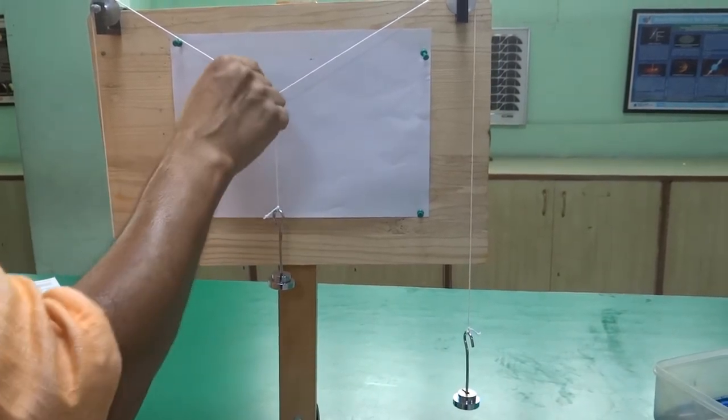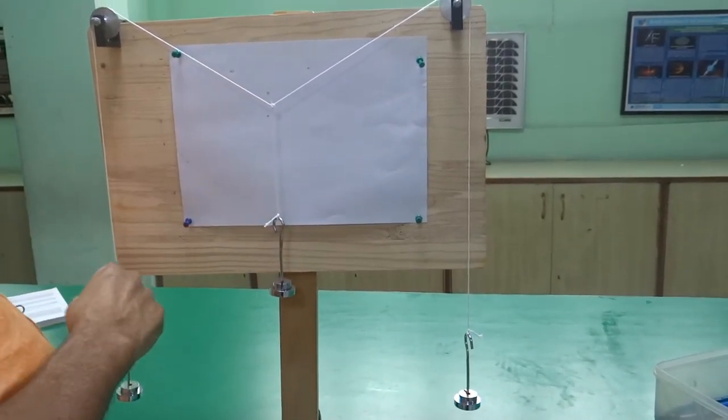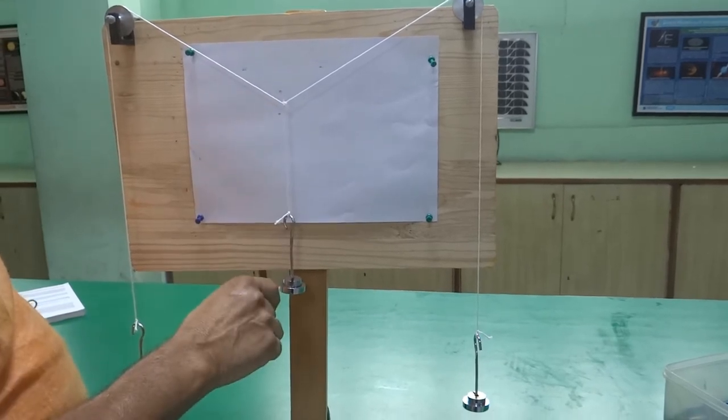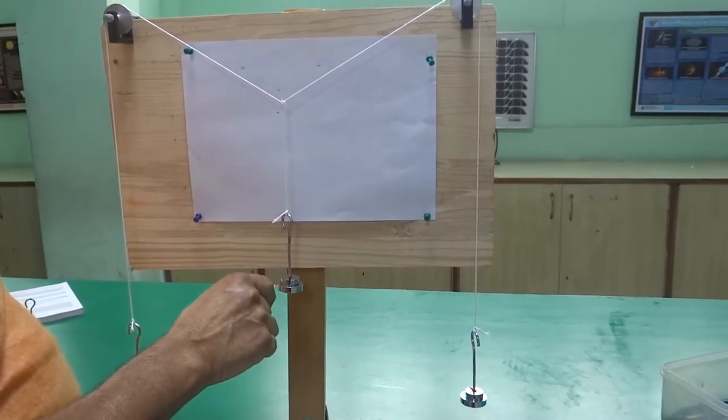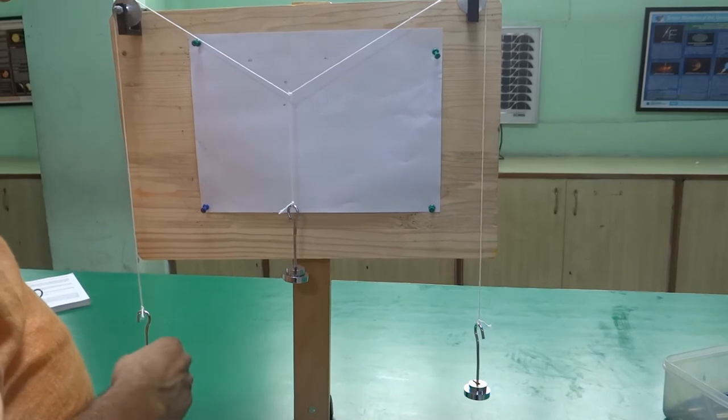So draw parallelogram by choosing a scale. And after drawing parallelogram, join diagonal of the parallelogram. And check it whether this is equal to 70 grams or not. Right now we have kept 70 grams here.